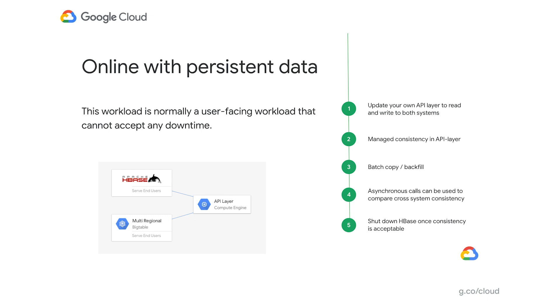The last migration path is more complicated — this is where you're migrating a workload that has persistent data without downtime. The first step is updating the write layer of the system, and you're also going to want to look at the read layer. Once you've got updates writing to both HBase and Bigtable, you want to run a verification that it's happening correctly and start batch copying all the existing information from HBase into Bigtable. Once you've migrated all the information, your two systems should be in sync. You can then migrate the read workload, verify performance of the system, and start decommissioning the old system. This one can take a little bit longer because you have to have both the dual writing up front and then the backfill operation — it's sort of a combination of the previous approaches.